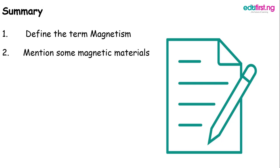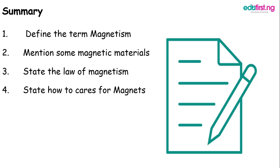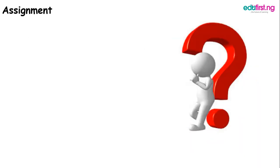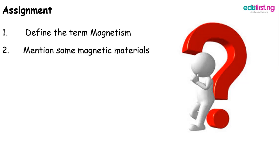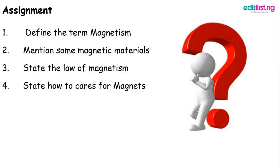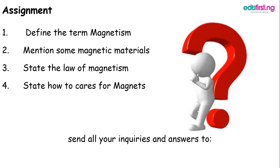In summary, we have been able to define magnetism, mention some magnetic materials, state the law governing magnetism, and state how to care for our magnets. As an assignment, every student should be able to define magnetism, mention some magnetic materials, state the law of magnetism, and state how to care for magnets. Thanks for watching — do stay tuned to our YouTube channel for more topics. Bye!